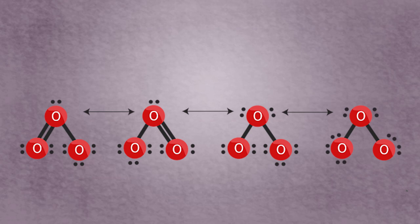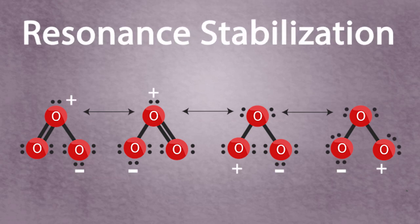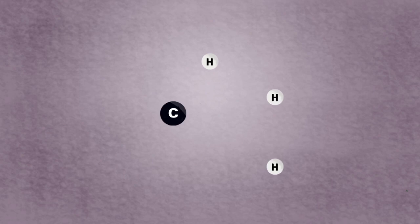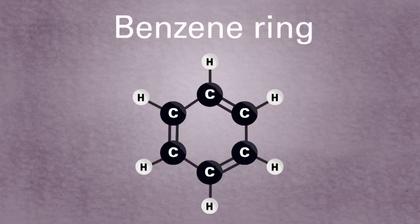But the double bond electrons are in fact delocalized around the structure of the molecule. This is known as resonant stabilization. The same phenomenon is seen in a benzene ring.